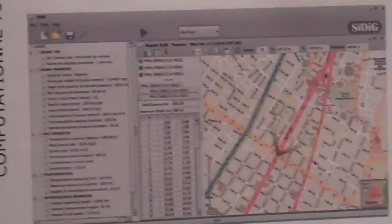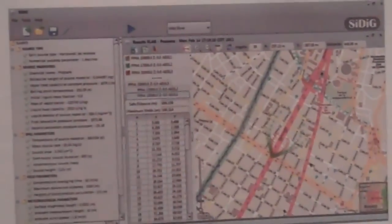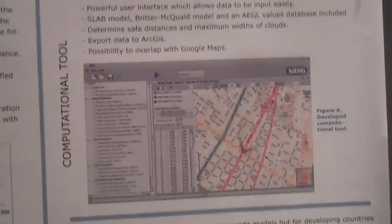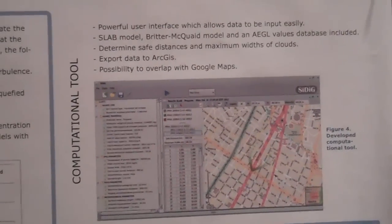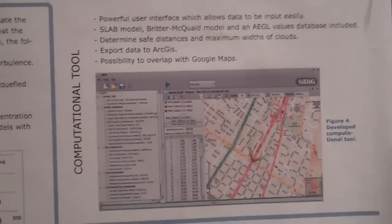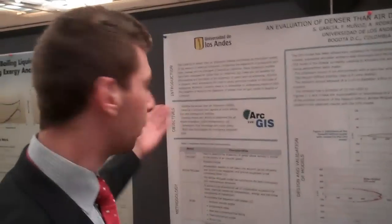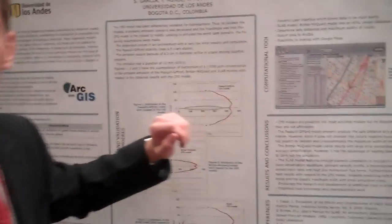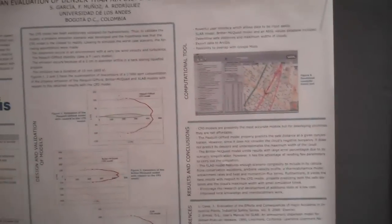We built a computer tool completely programmed in Java. It has a powerful user interface which allows data to be input easily. We included the SLAB model, the Briden-McQuaid model, and the AEGL values database — the Acute Exposure Guideline Levels determined by the Environmental Protection Agency. It allows us to determine safe distances and export data to ArcGIS, a geographic information system, to determine how many people are affected and the transportation network. We can also overlap results directly with Google Maps right on the tool.